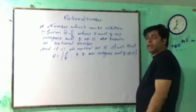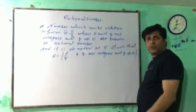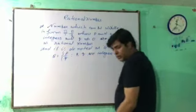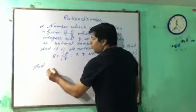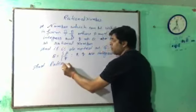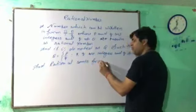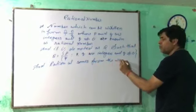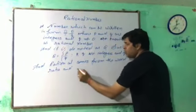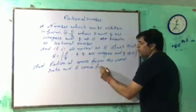It is denoted as Q, such that Q equals P upon Q, where P and Q are integers and Q is not equal to 0. One more thing: the word rational number comes from the word 'ratio,' and Q comes from 'quotient.'